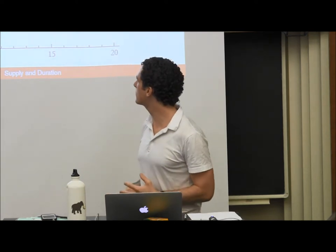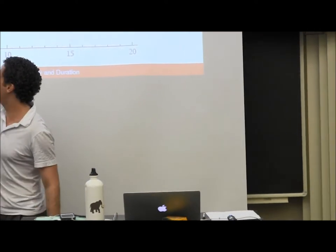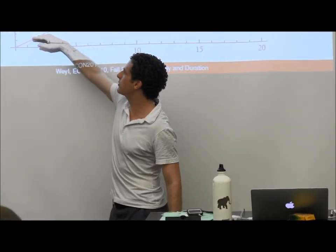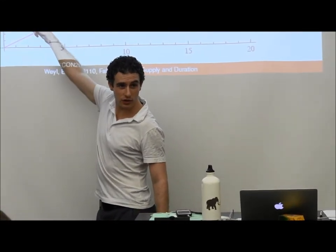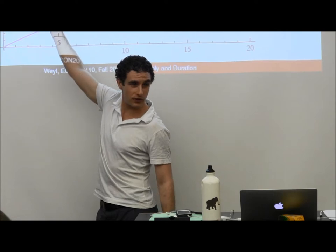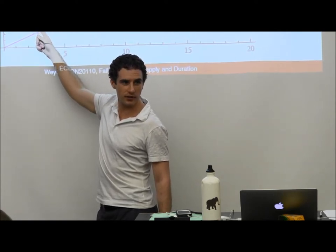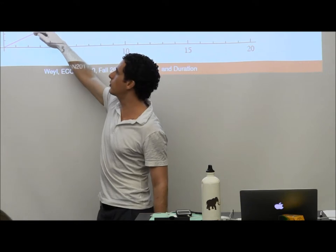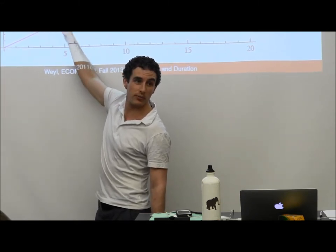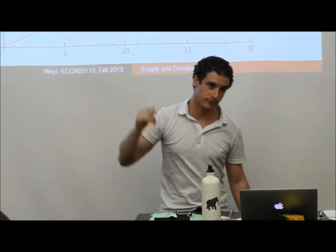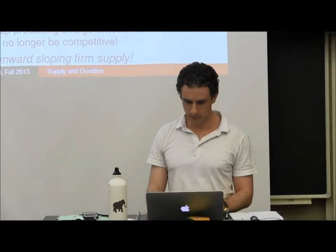If the price is below the average cost curve due to fixed costs, the firm wouldn't produce. They're only going to produce once they're above the average cost curve.